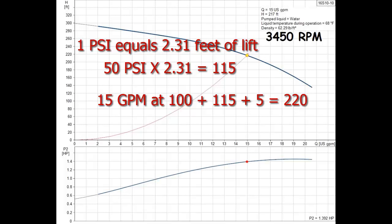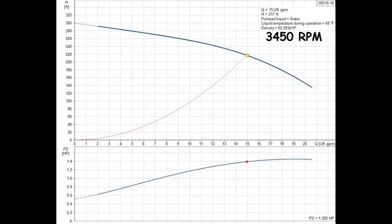That 115 feet of lift for the pressure must be added to the actual pumping depth to water in the well. If the pumping water level in the well is 100 feet and there is 5 feet of friction losses in the pipe, the pump must be able to produce 15 gallons per minute from 100 foot depth plus 115 feet which is the 50 pounds pressure needed plus 5 foot of friction loss for a total dynamic head of 220 feet.